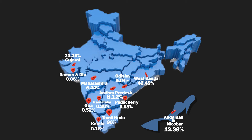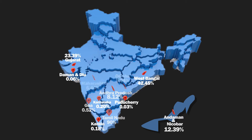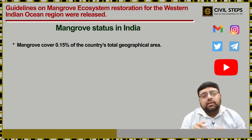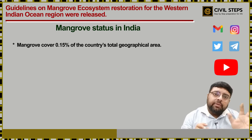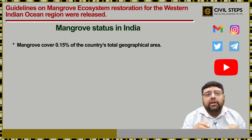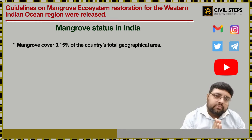Finally, it is Puducherry. Remember this order as it can be asked directly in an exam. Some important mangrove sites in India include Godavari-Krishna mangroves, Baratang Island mangroves in Andaman and Nicobar, and Pichavaram mangroves in Tamil Nadu.